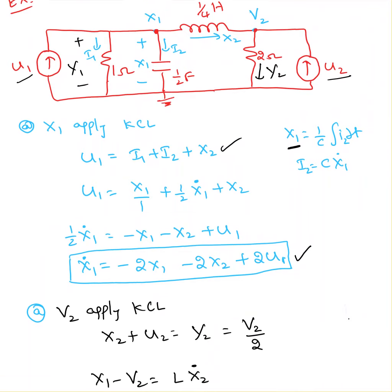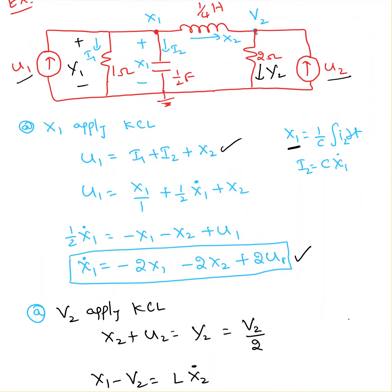To get the other equation, apply KCL at node v2: x2 is coming in, u2 is also coming in, and y2 is going out. So x2 plus u2 equals y2, where y2 is the current through the 2 ohm resistor, which is v2 over 2. However, v2 is an unknown variable and needs to be replaced.